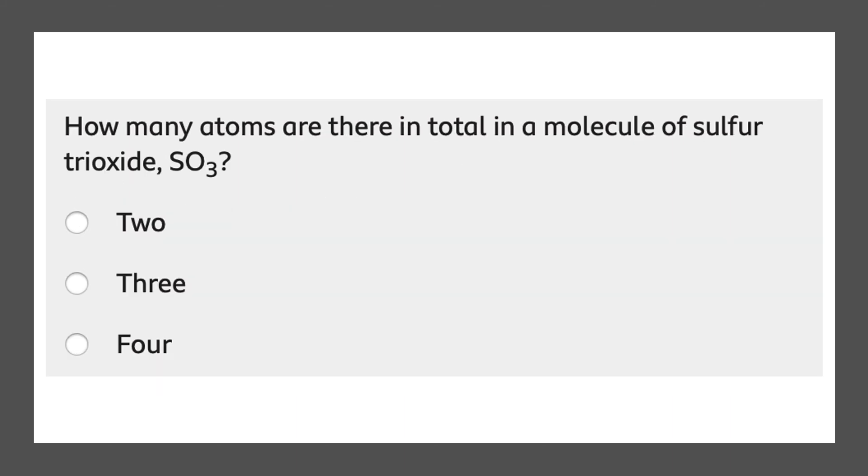Our final question: how many atoms are there in total in a molecule of sulfur trioxide, SO3? It's given us the formula over here. We have 1 atom of sulfur and we have 3 atoms of oxygen. So we have sulfur plus oxygen plus oxygen plus oxygen. So we have 1, 2, 3, 4. We have 4 atoms in total. And that will get you 1 mark.